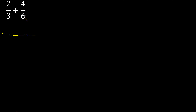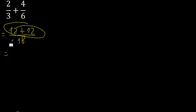First multiply like this: 6 multiplied by 2 is 12, 3 multiplied by 4 is 12, 3 multiplied by 6 is 18, giving us 24 over 18.